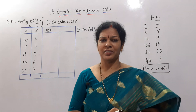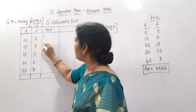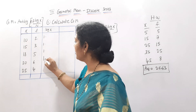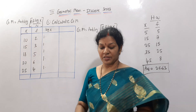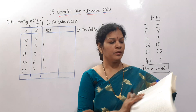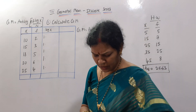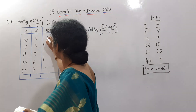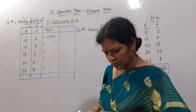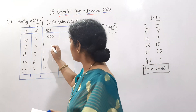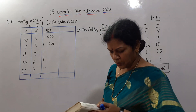All the values shown are two-digit numbers, so we give weightage accordingly to each number. Now taking log from the log tables: log of 10 is 1.0000 — all zeros. Log of 15 is 1.1761. Log of 18 is 1.2553.